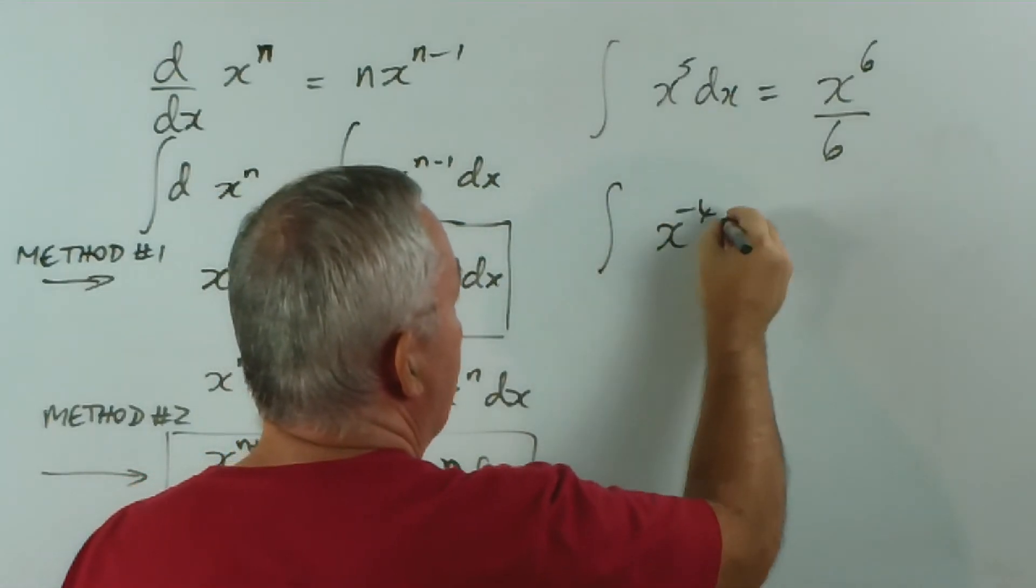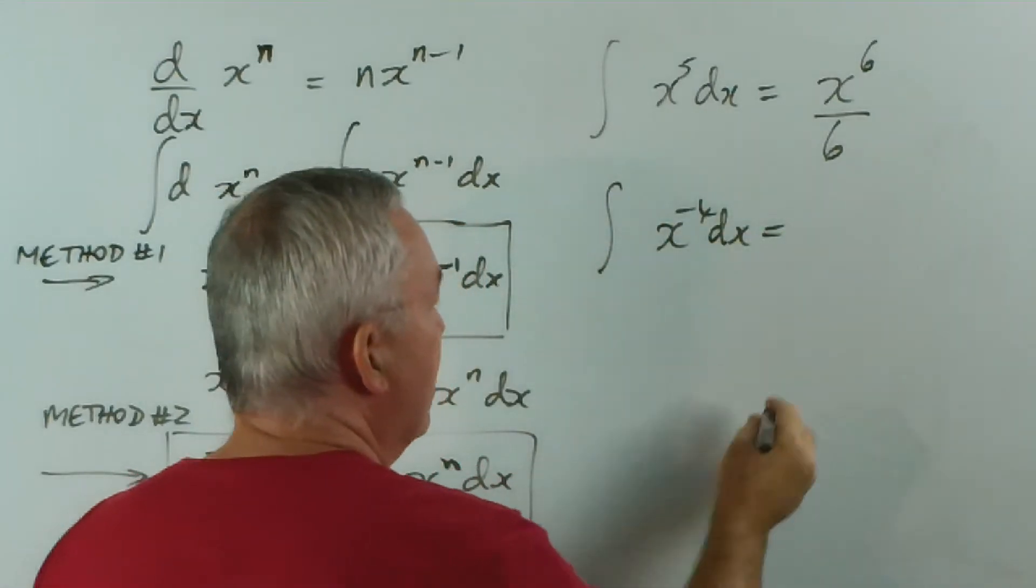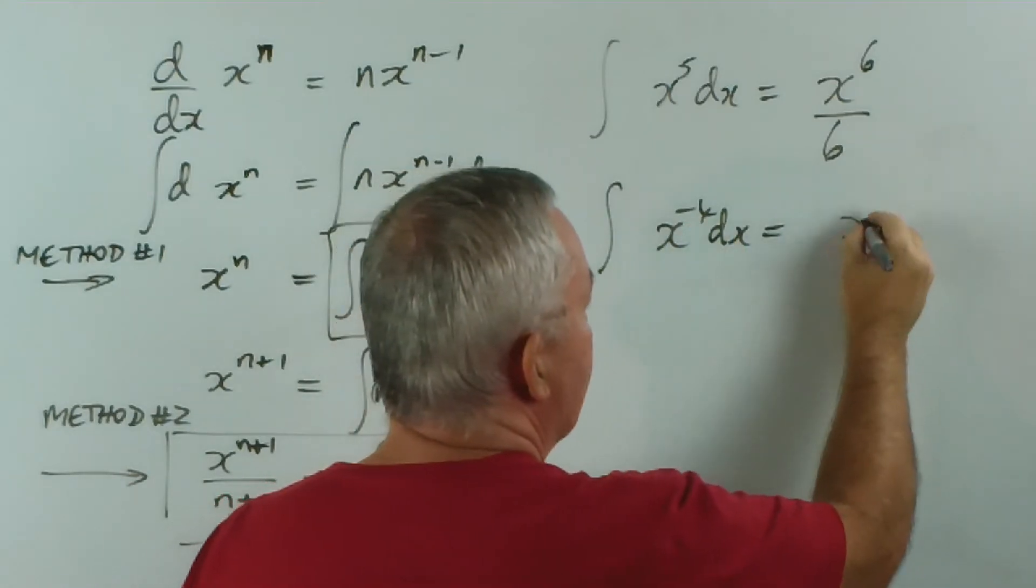x to the minus 4 dx. If we add one to that, we get x to the minus 3.